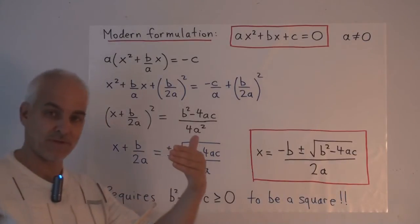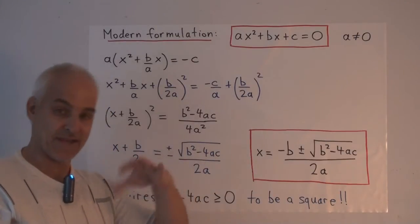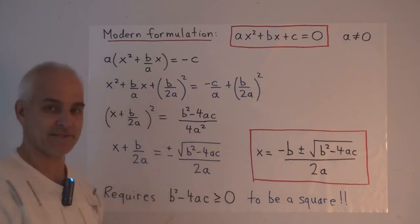And because the square root has an ambiguity in terms of sign—if we have one solution, the negative of it is also a solution—we put a plus or minus here, telling us that we can either take plus this or minus this.